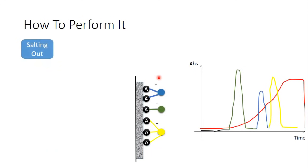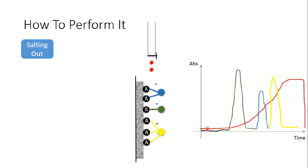There is another method called salt gradient elution. Different proteins that are all negatively charged have different side chains, so some proteins bind to substance A with one side chain, others with two, three, or more binding groups. Let's say one protein has two binding groups, another has one, and another has three. If we apply a salt solution and gradually increase the salt concentration...